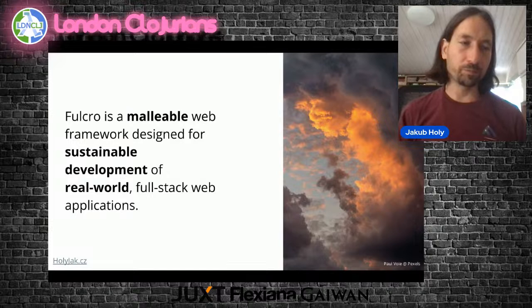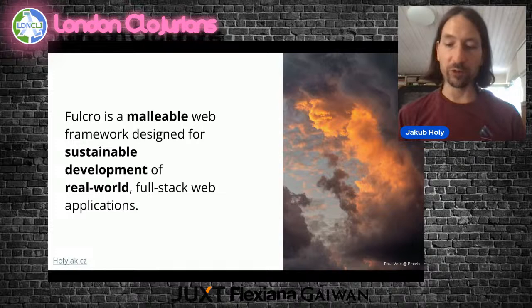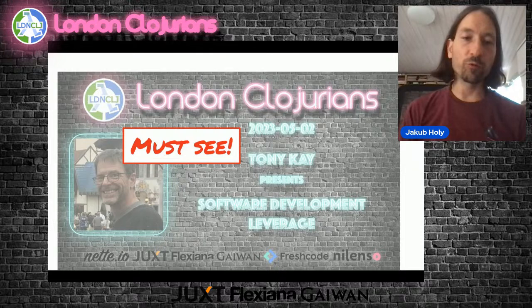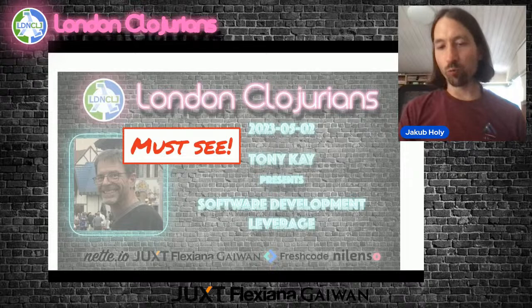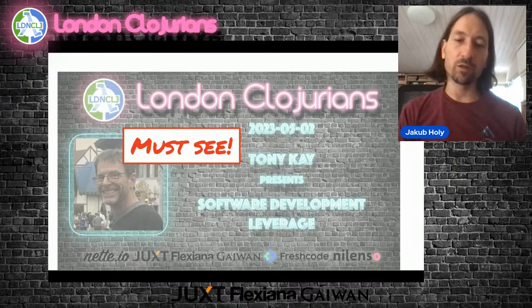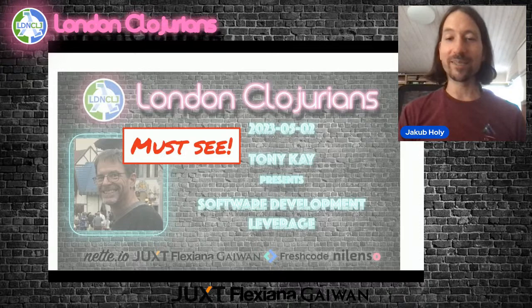Malleable means that Fulcro is not a big black magic box, but a small set of principles turned into code with hooks for modifying or overriding essentially any of its important behaviors, as long as you are aligned with the overall philosophy of the framework. Tony Kay, the author of Fulcro, had an excellent talk here not long ago which I highly recommend — he describes how Fulcro came to be and talks about the problems with making web application development sustainable. I highly recommend you see that talk even if you are not particularly interested in Fulcro itself.